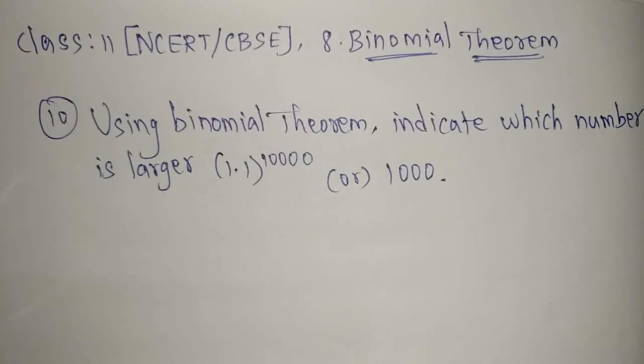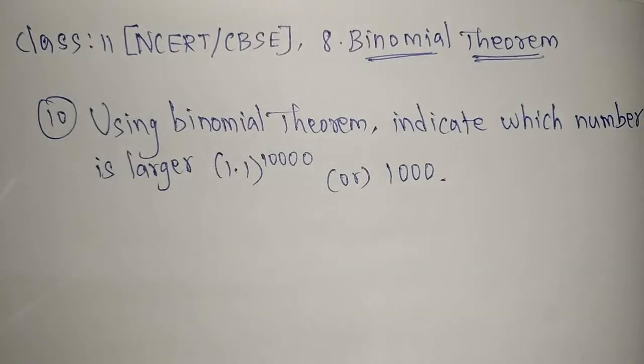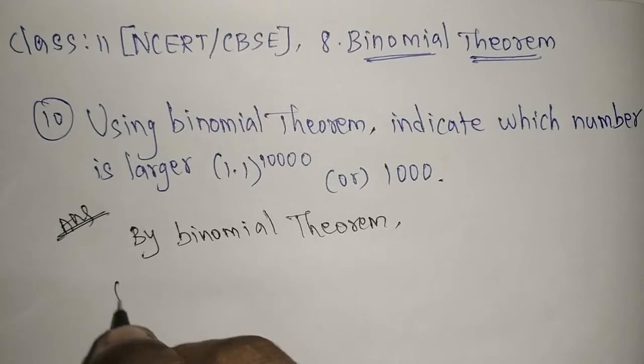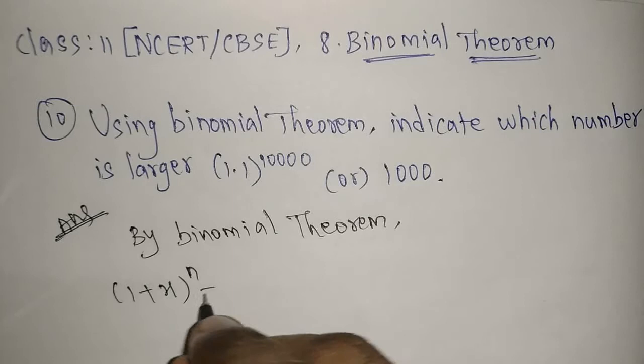That's what they mentioned here, binomial theorem. I'm going to write the formula: (1+x)^n which is equal to nC0·x^0 + nC1·x^1 + nC2·x^2 + ... + nCn·x^n.